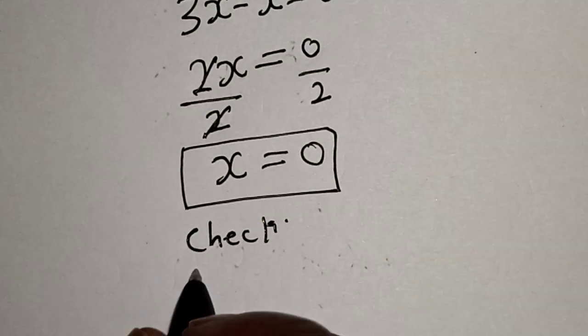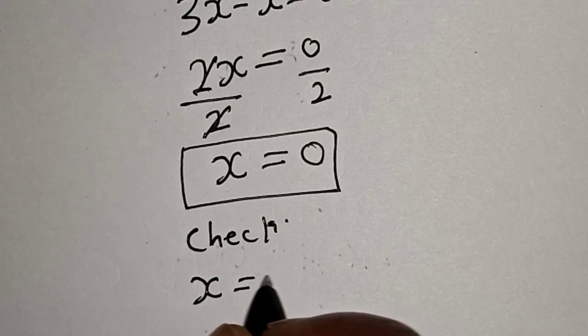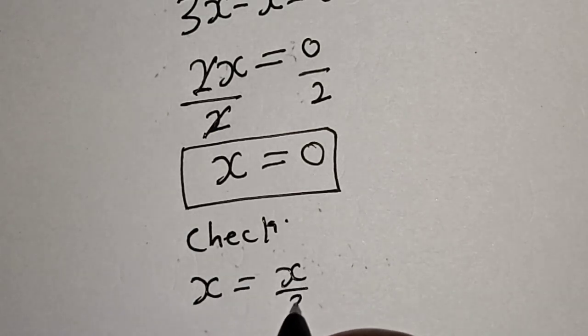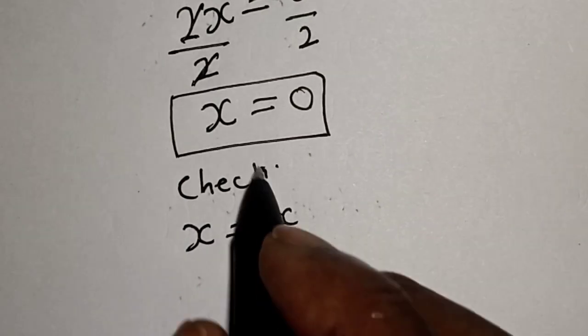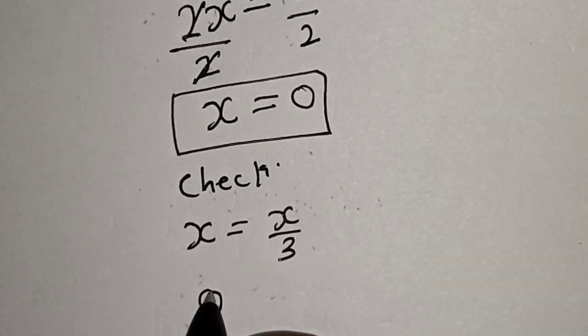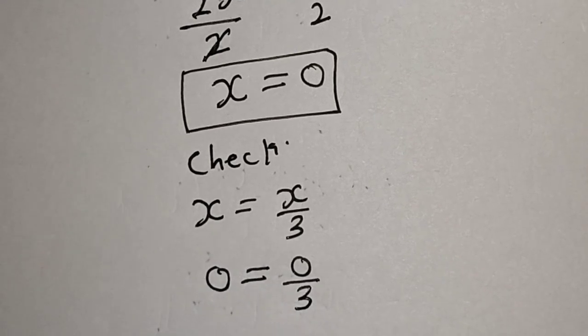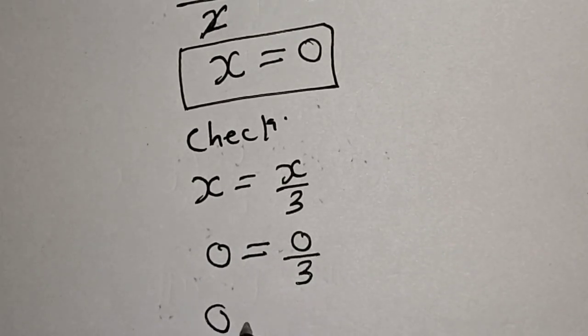We have the given equation: x equals x over 3. When x equals 0, we have 0 equals 0 divided by 3, which is 0.